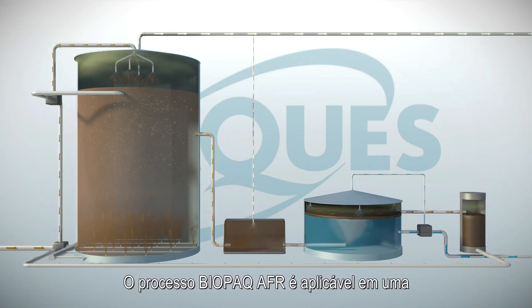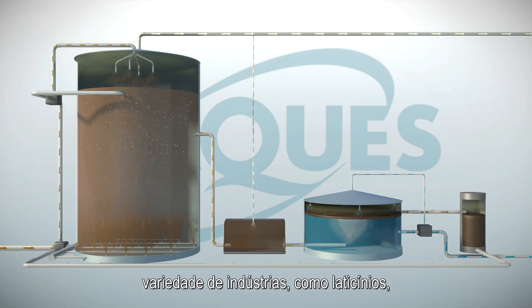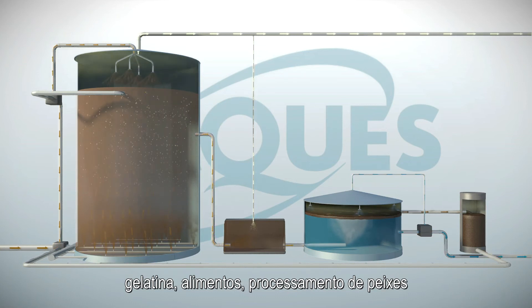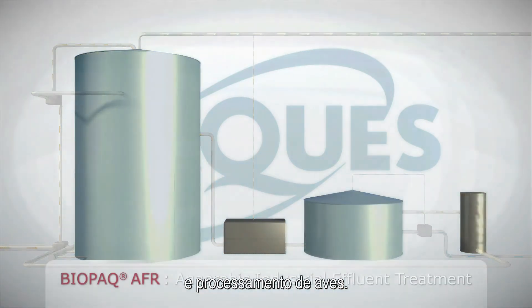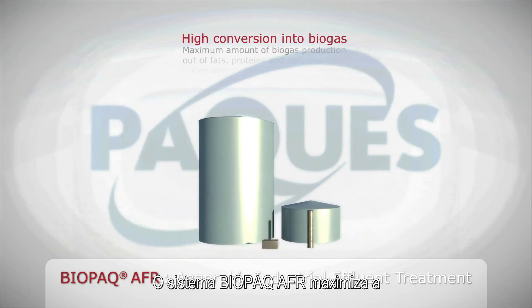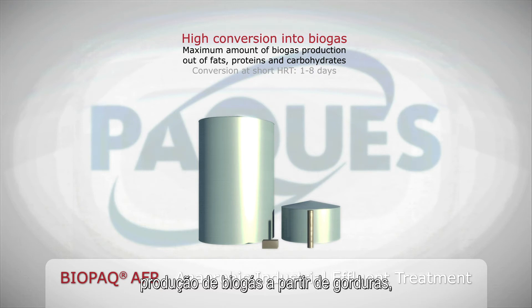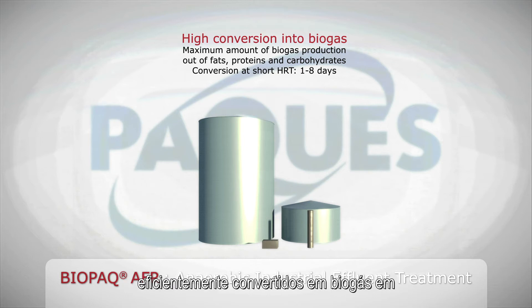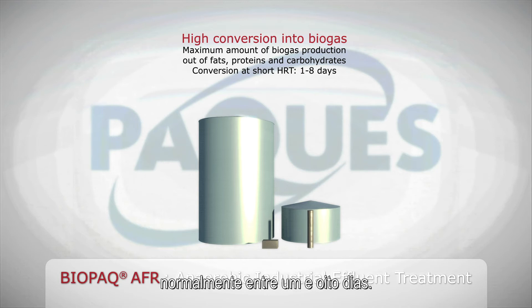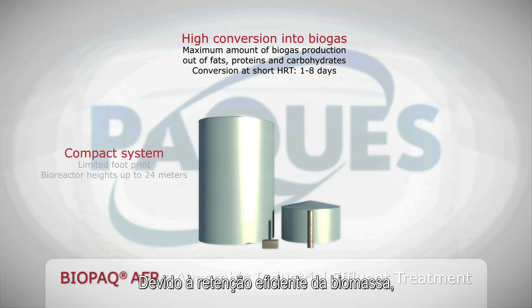The Biopac AFR process is applied in a variety of industries such as the dairy industry, food tank cleaning, fish processing and poultry industry. The AFR system maximizes the biogas production from fats, proteins and carbohydrates. Both soluble and insoluble compounds are efficiently converted into biogas at short hydraulic retention times, typically between one to eight days.